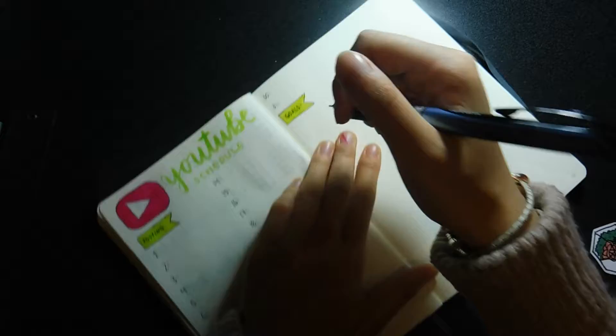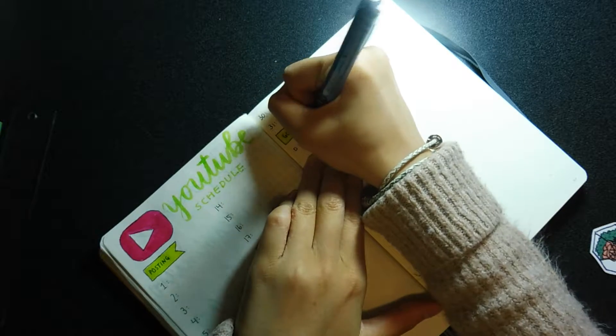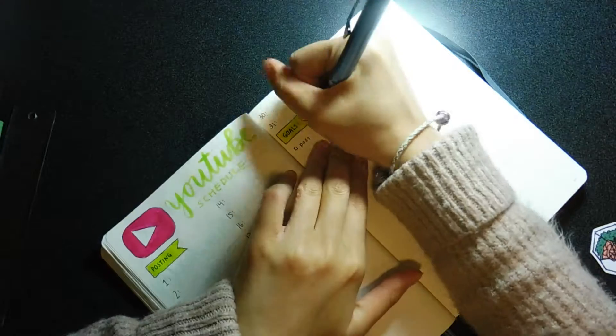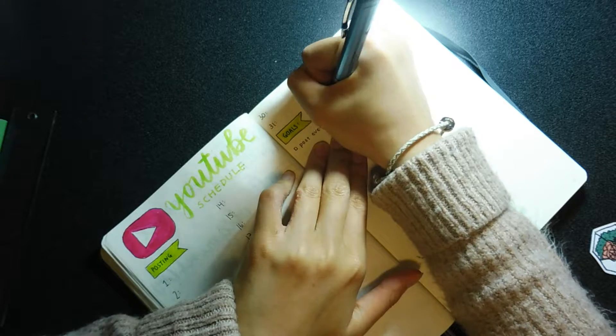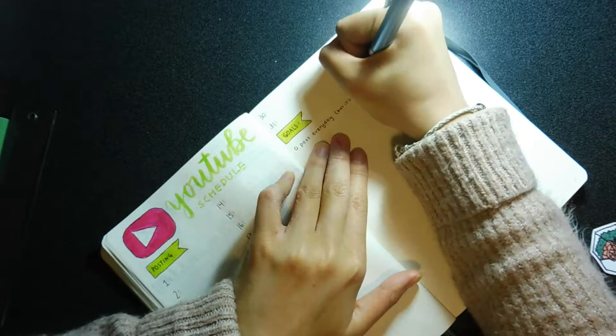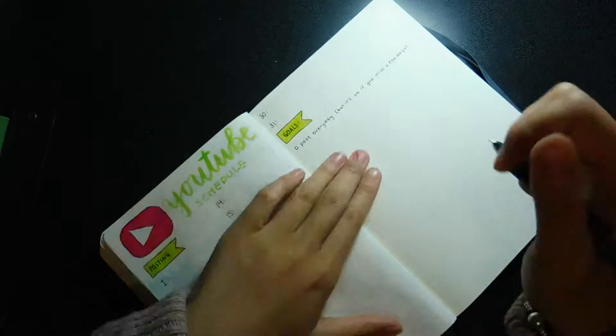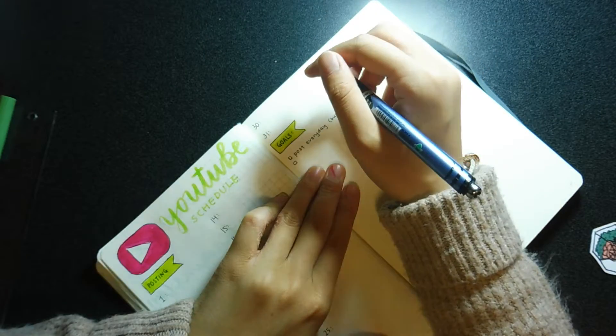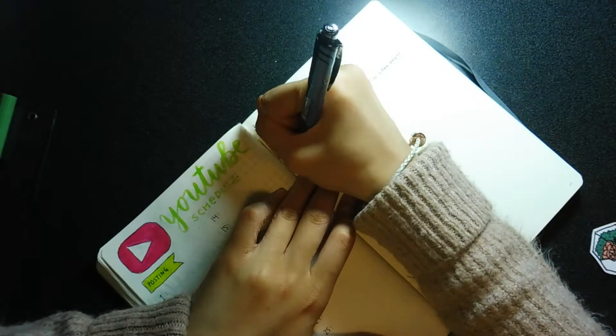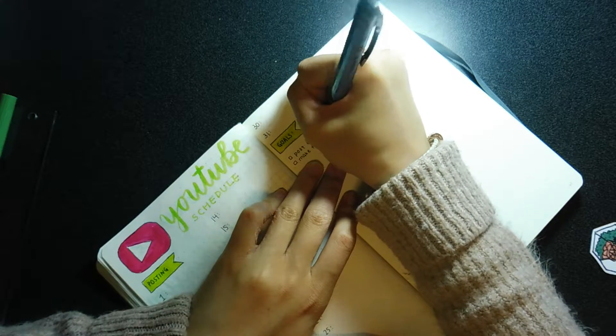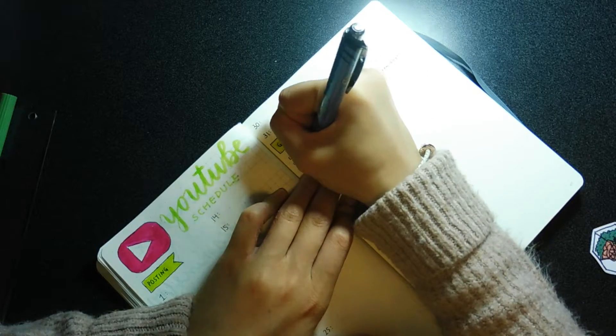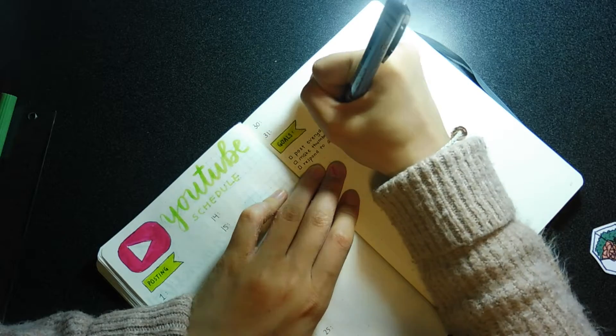My last spread for this month is my YouTube posting schedule because I am planning to do Vlogmas, so I want to kind of keep track of what goes into each video so that it's not too repetitive for you guys. I basically have my posting, and then every day I will write basically what I want in each vlog. Then I have a goal section because I like to set goals for my YouTube videos and make sure that I'm kind of progressing and not moving back.